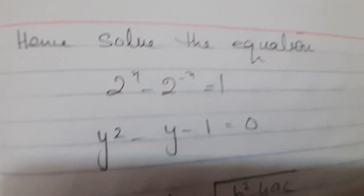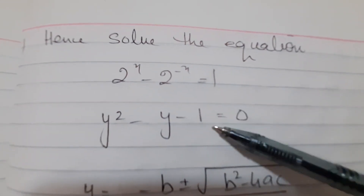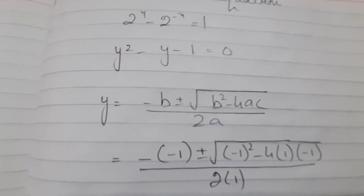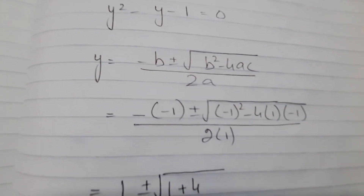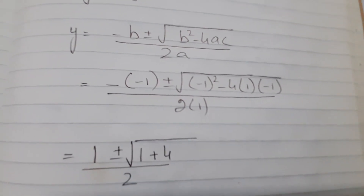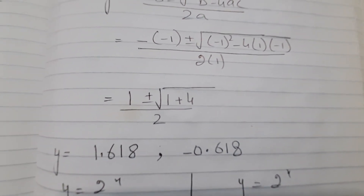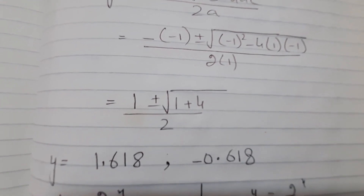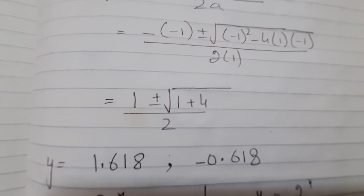Part 2 of the question says 'hence solve this equation.' The original equation has been changed into a quadratic of Y, so we simply apply the quadratic formula. After applying the formula we get two answers: Y = 1.618 and Y = −0.618. The actual equation is in X, so the solution in Y is still incomplete — we need to find X.